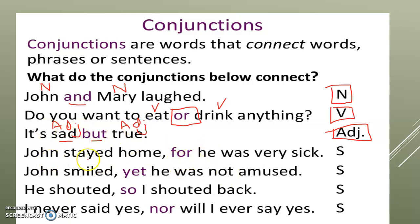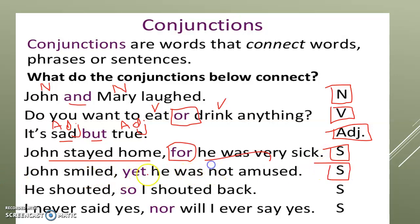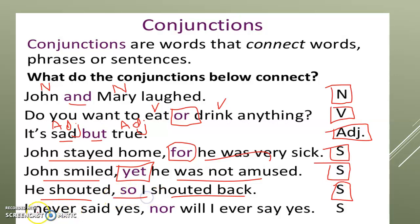Whole sentences can also be connected: 'John stayed home for he was very sick' — two sentences connected with 'for' (you can also use 'because'). 'John smiled yet he was not amused' — two sentences connected with 'yet.' 'I showed it so I showed it back' — two sentences connected with 'so.' 'I never said yes, nor will I ever say yes' — two sentences connected with 'nor.' So conjunctions are words that connect words, phrases, and sentences — they are called joining words or connectors.